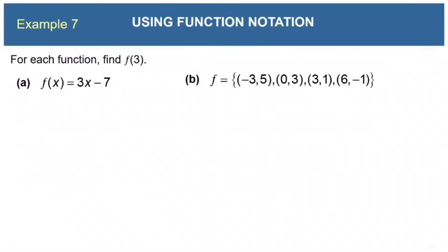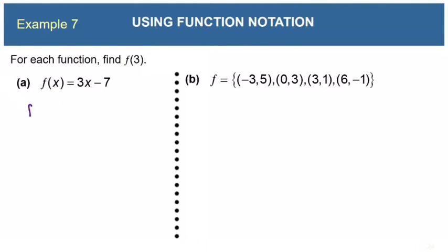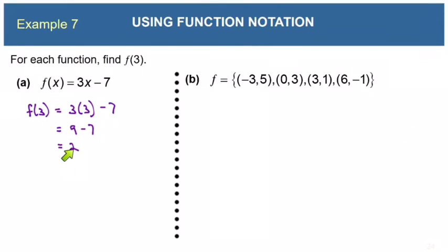Now we're going to look at some different types of functions written different ways, and evaluate each function at 3. The first is a function represented by an equation. If we plug in 3, we have 3 times 3 minus 7, which is 9 minus 7, which is 2. So in this case, f of 3 equals 2.